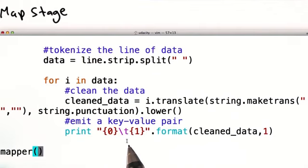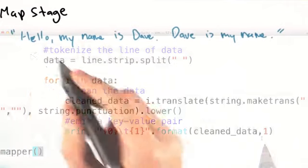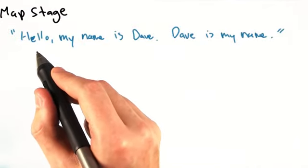So if a particular word appears multiple times in the document, we will emit multiple identical intermediate key value pairs. The word and the number one, over and over again. Let's say we ran this mapper on the following sentence.